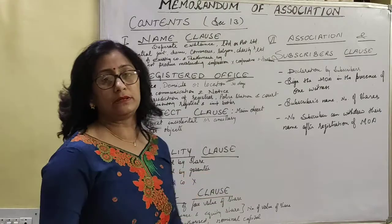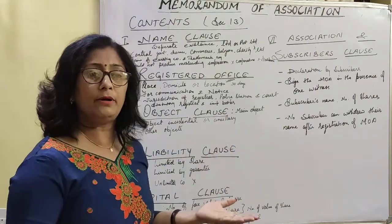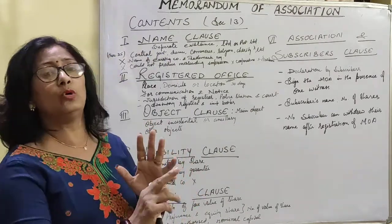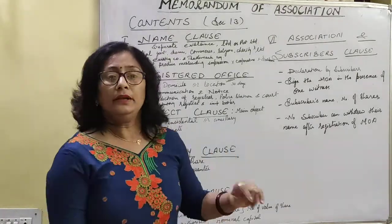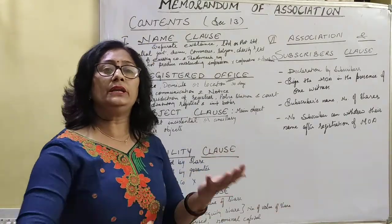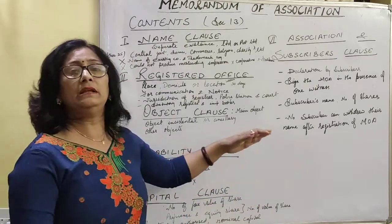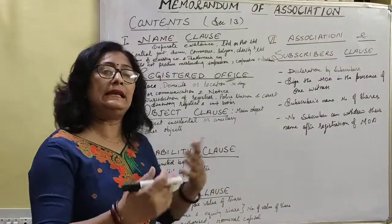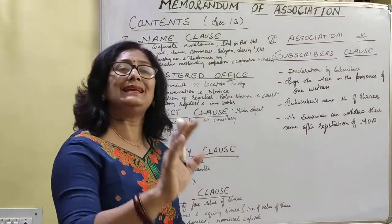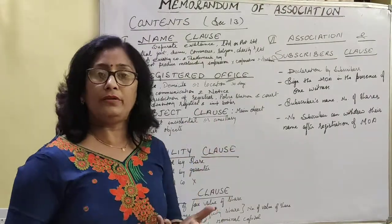Next is the Liability clause. The liability clause includes three types: limited by share, limited by guarantee, and unlimited liability. You have to mention in the liability clause what the nature of your company is — whether it is limited by share or limited by guarantee. If you are silent on this, meaning you have not used the liability clause in the memorandum, this shows the company is unlimited in nature.